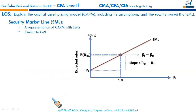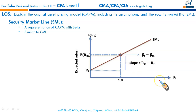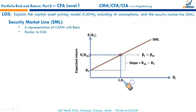Here is the security market line. We first discussed the capital allocation line, then the capital market line, and now we have the security market line. The SML is a representation of CAPM with beta reflecting systematic risk. Similar to the CML, the y-intercept represents RF and the slope is the market risk premium. Note that in the CAL and CML, we had total risk (standard deviation) on the x-axis, but in the SML we have the systematic risk (beta) of the asset on the x-axis.